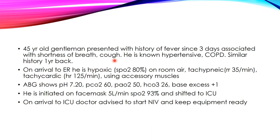Initial ABG shows pH 7.2, pCO2 of 60, pO2 of 50, bicarbonate 26, base excess +1 — this fits into acute respiratory acidosis. The ER physician started oxygen supplementation at 5 liters per minute maintaining saturation at 93%. The patient was shifted to ICU, where the critical care physician advised the nurse to start NIV and keep the equipment ready.